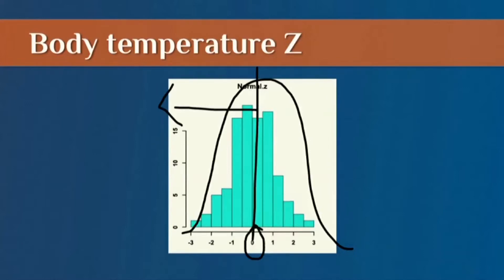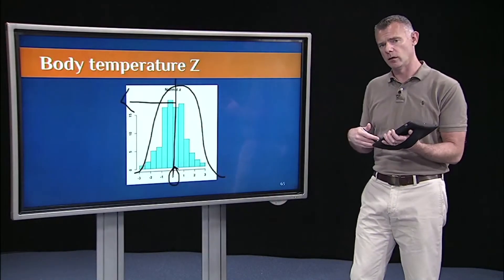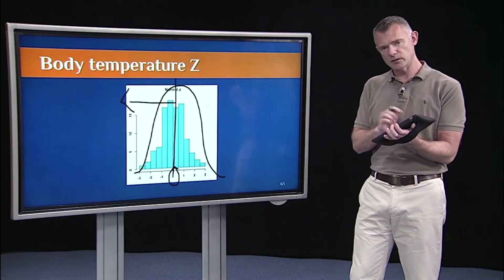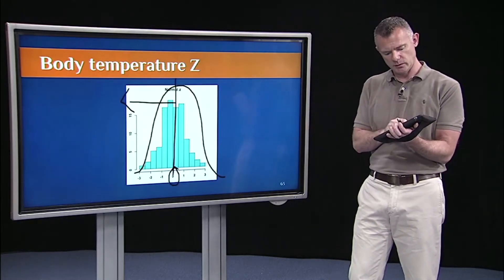In other words, the percentile rank of a Z of 0 or 98.6 degrees Fahrenheit is 50%. 50% of the distribution falls below the mean.